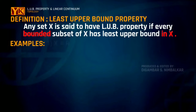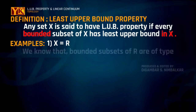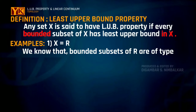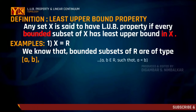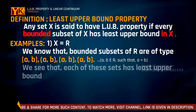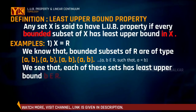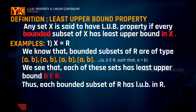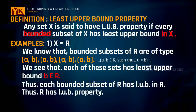For example, if we have x equal to the topological space R, then we first consider all the bounded subsets of R. We know that all bounded subsets of R are of type: closed interval [a,b], open interval (a,b), interval closed at a open at b, and interval open at a closed at b. Each of these sets has least upper bound b, which is an element of R. Thus every bounded subset of R has a least upper bound in R, and so R has the least upper bound property.